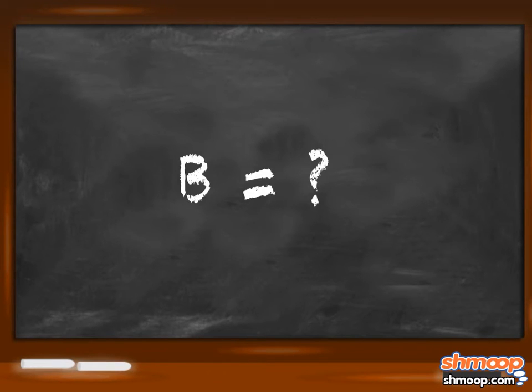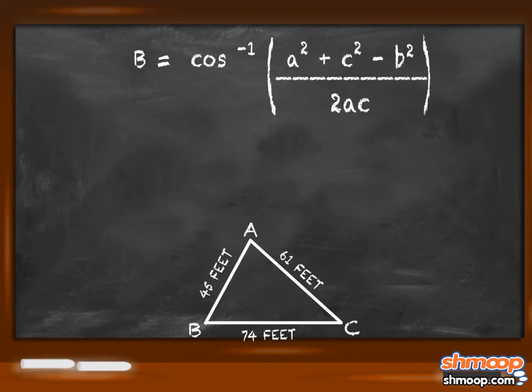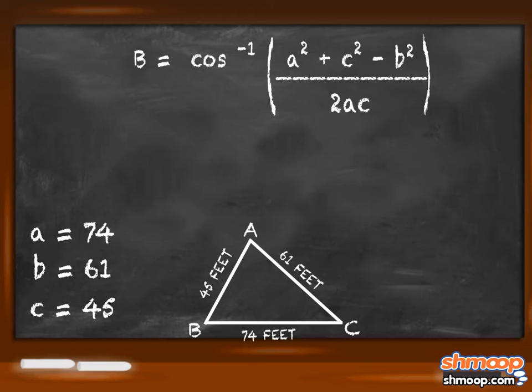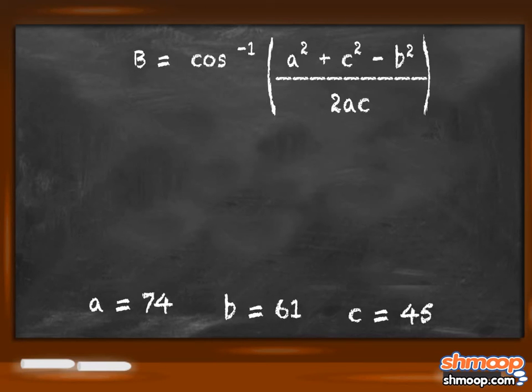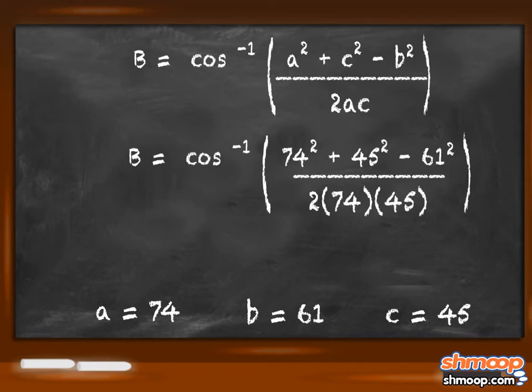To find angle b, we can use the Law of Cosines again. From our original triangle, we know that a equals 74, c equals 45, and b equals 61. So we can plug these into our formula, and we find that b equals around 55.4 degrees.